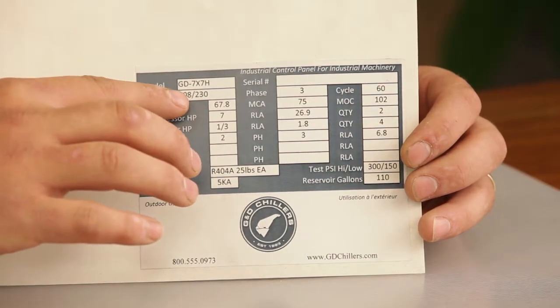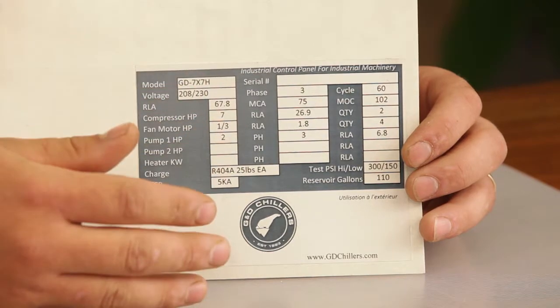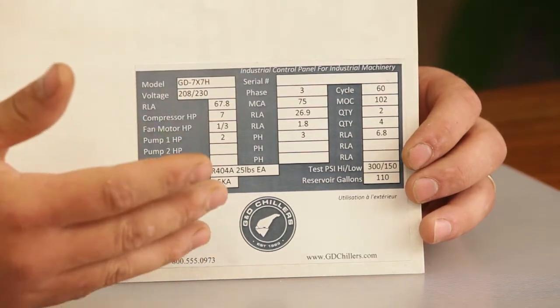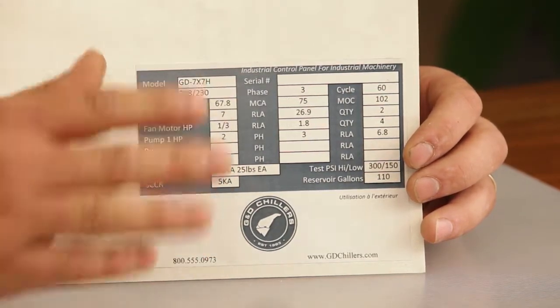Down here we've got 208 up to 240 volt. The chiller doesn't care either in three phase or single phase. It'll operate with any of those voltages.